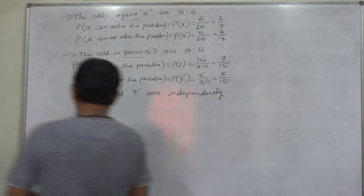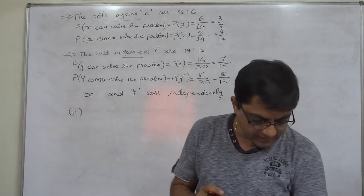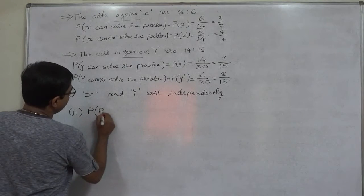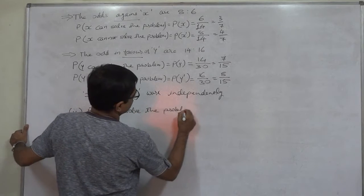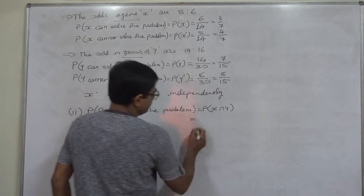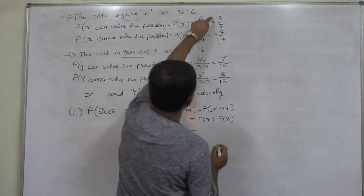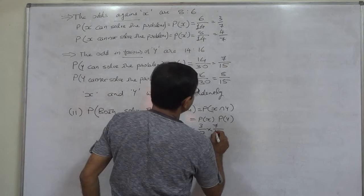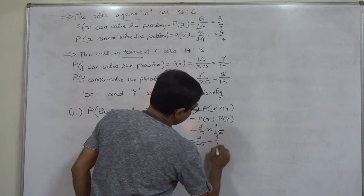Answer to question two: what is the probability that both working independently solve the problem? P(X intersection Y) = P(X) × P(Y) = 3/7 × 7/15 = 3/15, which simplifies to 1/5.